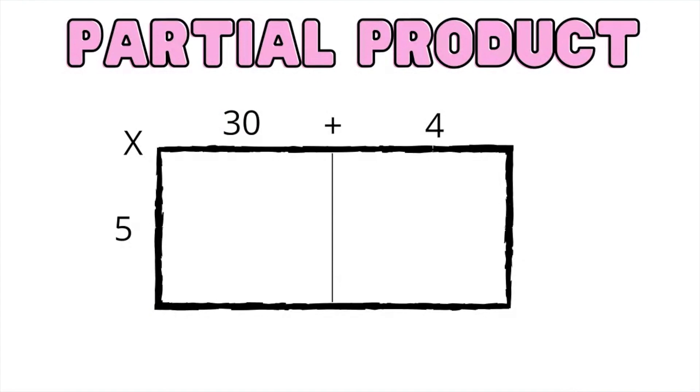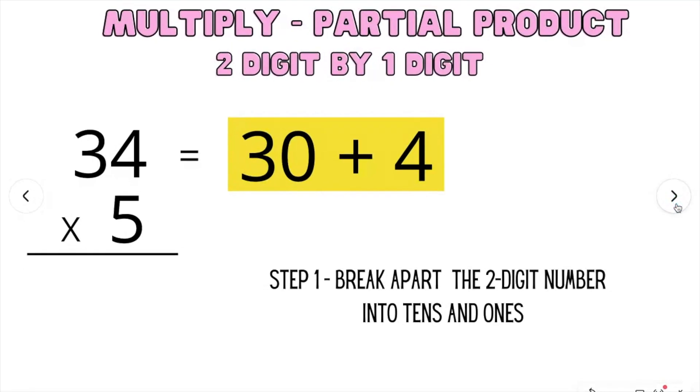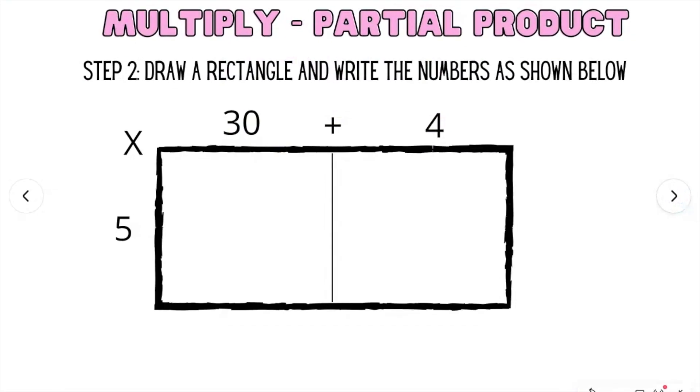Now let's multiply the same number, but using a different strategy. This is called the partial product. To multiply with a partial product, step 1 is to first break apart the two-digit number into tens and ones. So 34 equals 30 plus 4. Step 2 is to draw a rectangle like this. You're going to put a line in the middle. You're going to write 30 plus 4 times 5. So it's 34 multiplied by 5.